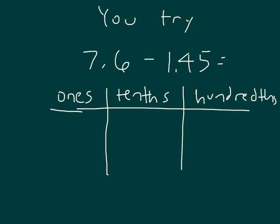Here is a problem for you to try: 7.6 minus 1.45. Since we have 1 and 45 hundredths, hundredths is the smallest unit. Set up your place value chart and do your work. Then unpause the video and check your work.